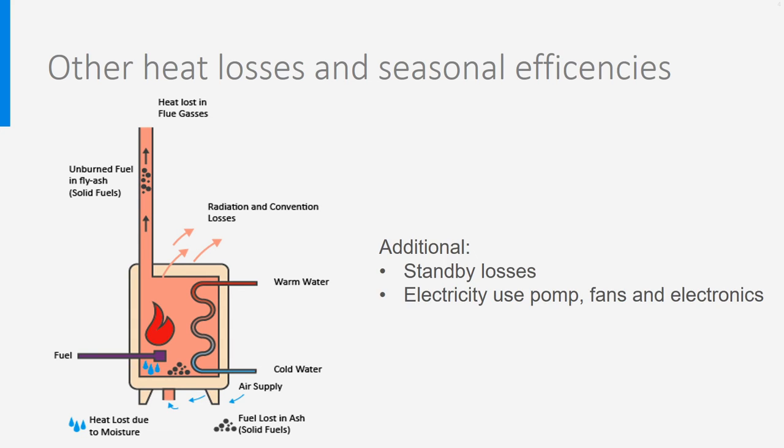We should not forget the so-called standby losses. When no heat is needed, the boiler switches to standby mode, in which the burner periodically starts heating the few litres of water in the heat exchanger and pipes. Standby losses generally amount to 1-2% of total energy use. In addition, some electricity is used for the electronics in the control system, the fans in the boiler, and the circulation pump for the radiator water. This electricity use is around 100-500 kWh yearly for domestic boilers, and is not accounted for in the efficiency.